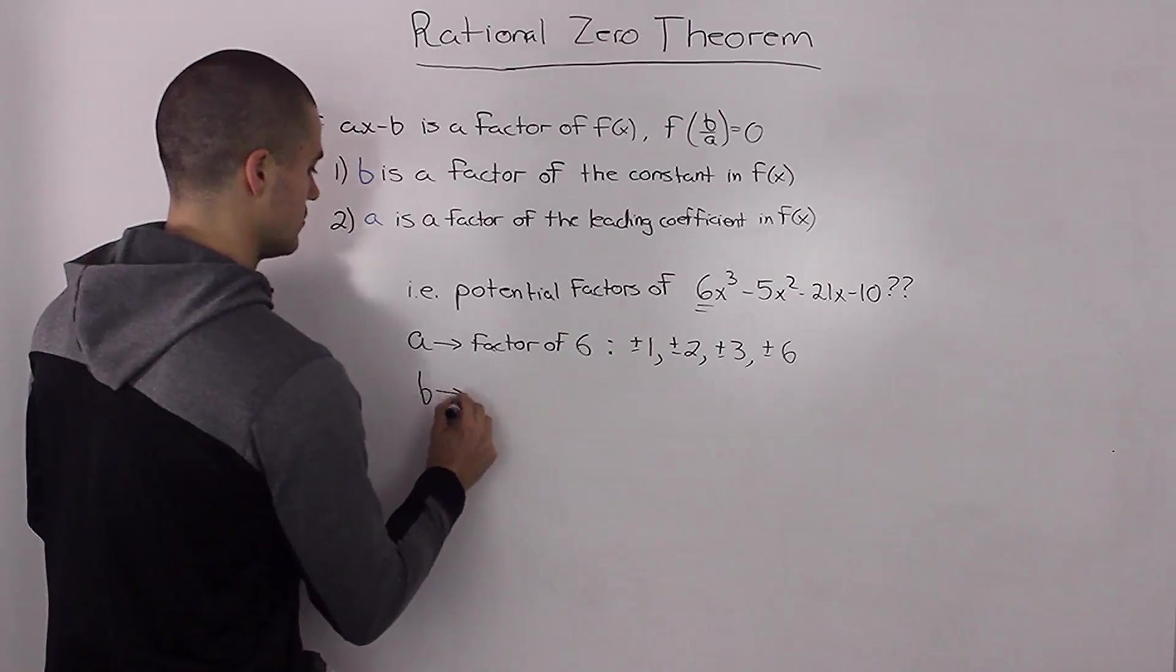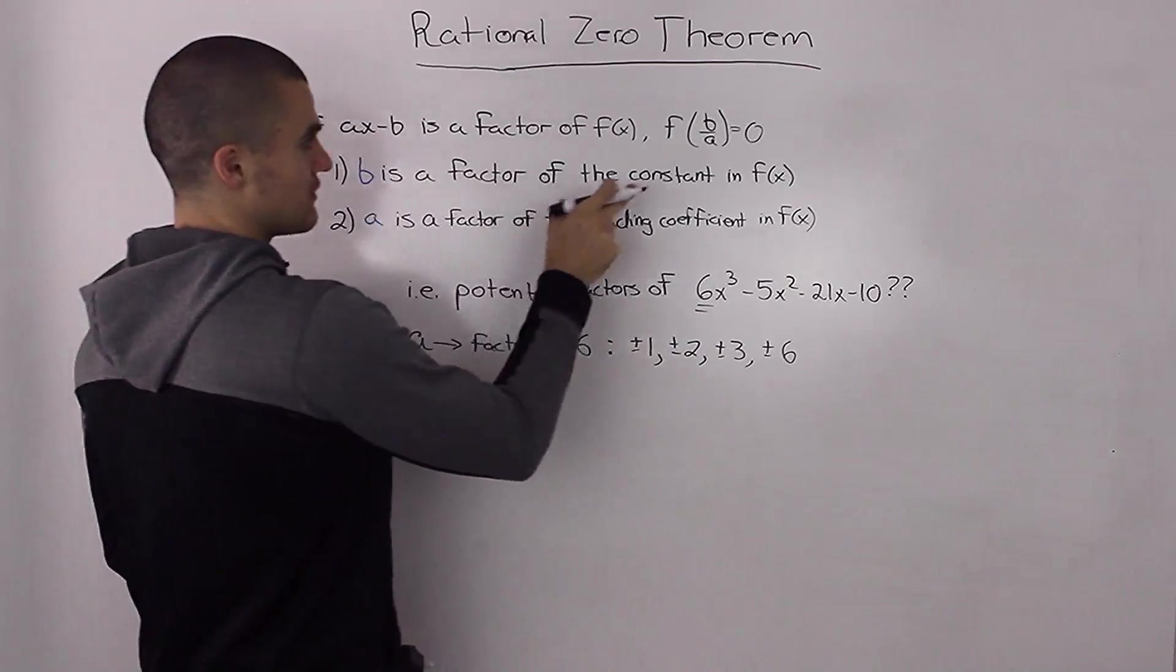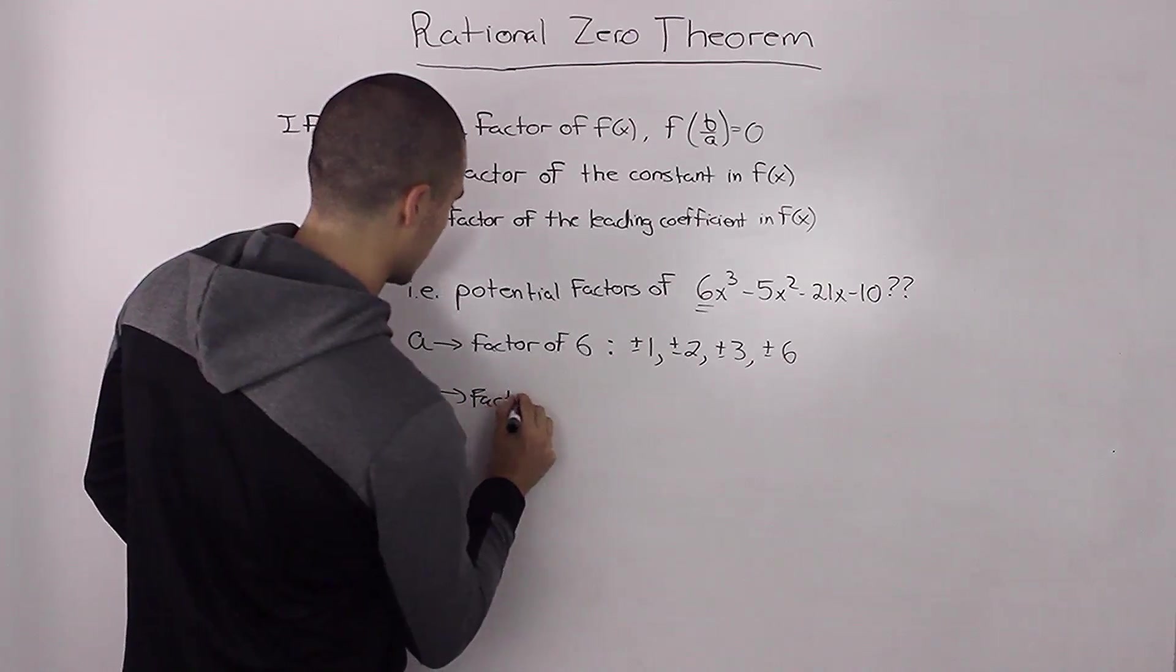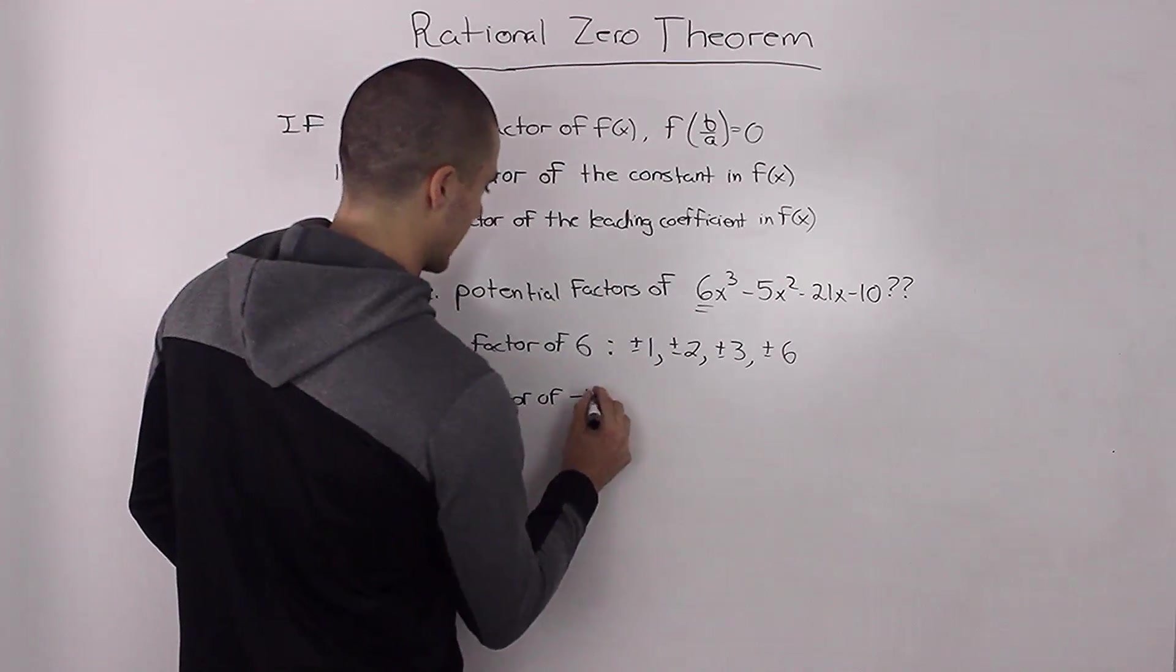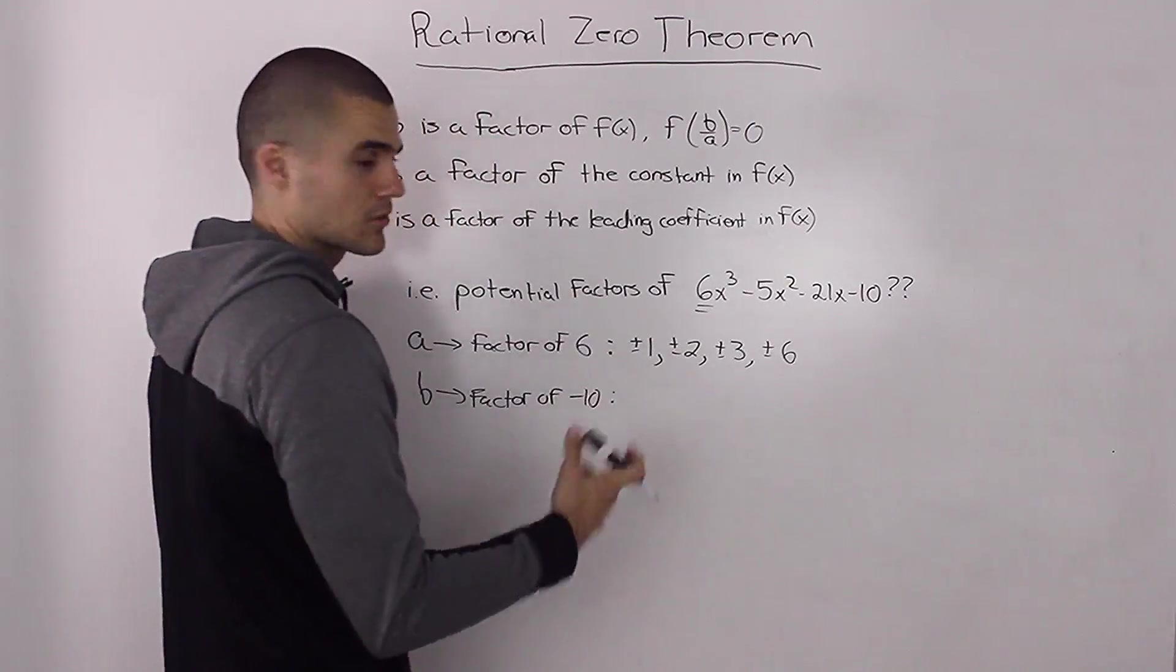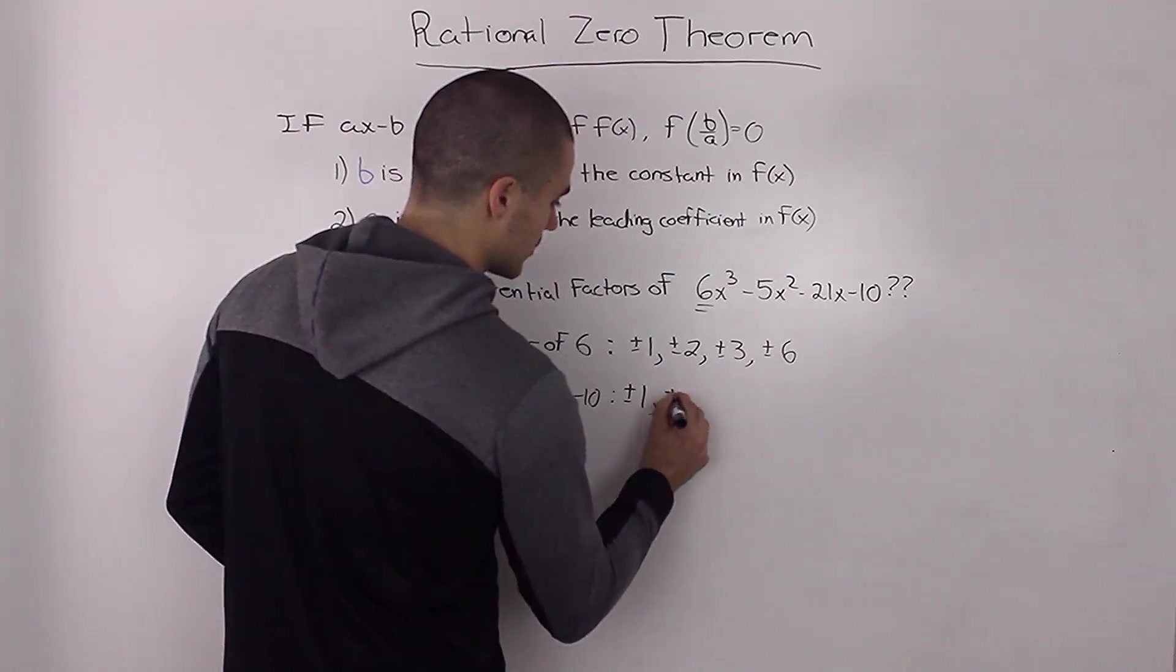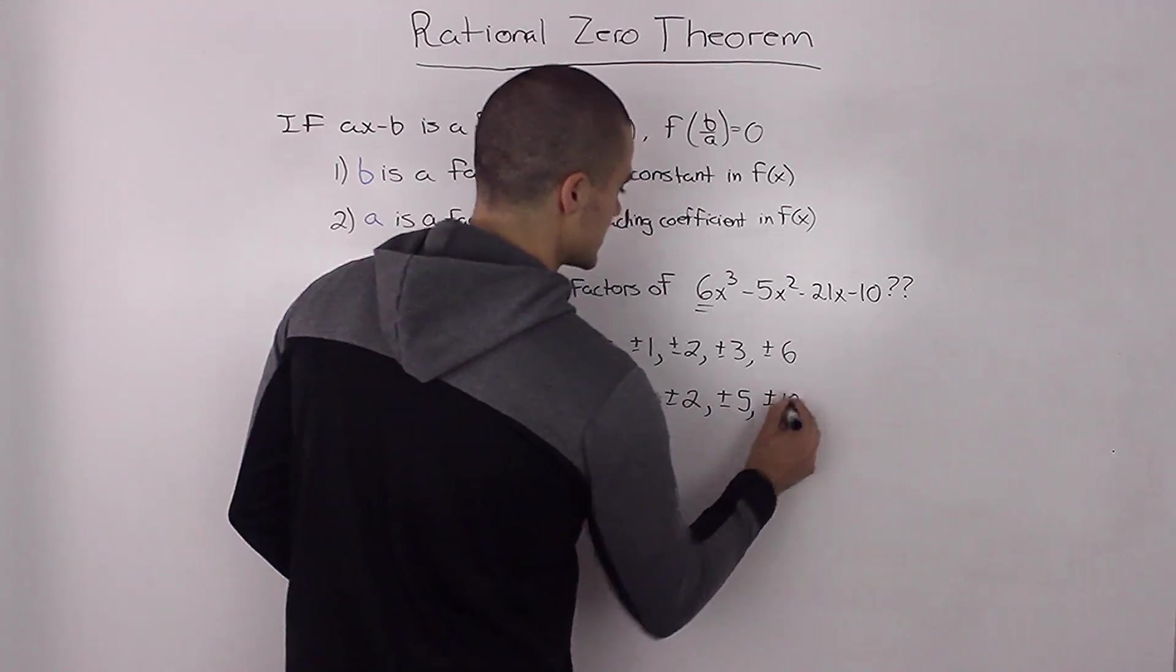Now the b value of any potential factors is going to be a factor of the constant in our polynomial, and our constant is 10. It's negative 10, but it doesn't matter whether it's positive or negative. The factors always have to be plus or minus. So what are all the factors of 10? You can have plus or minus 1, plus or minus 2, plus or minus 5, and plus or minus 10.